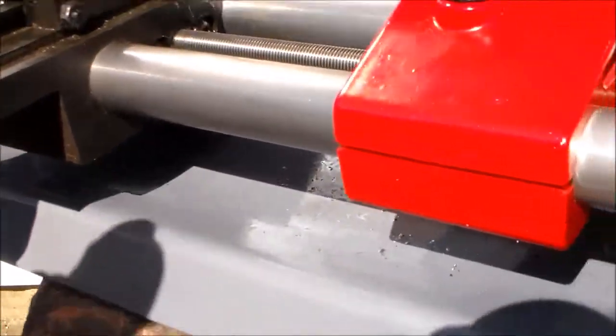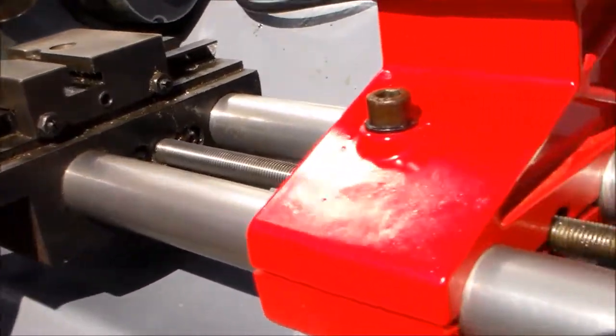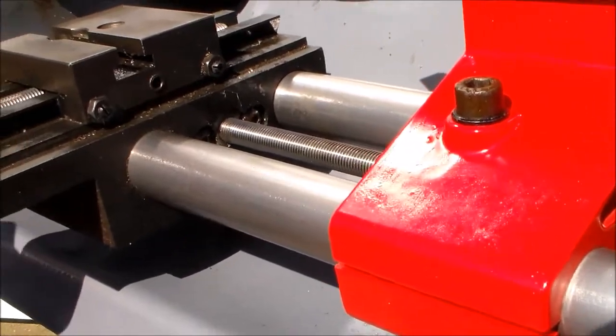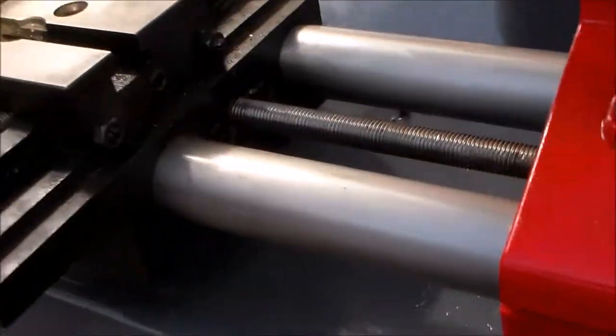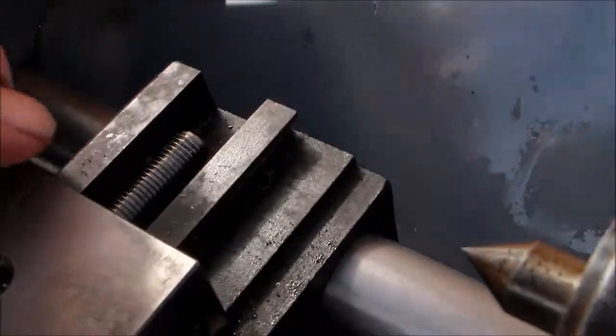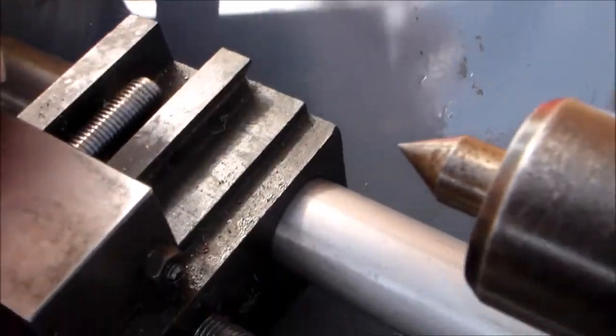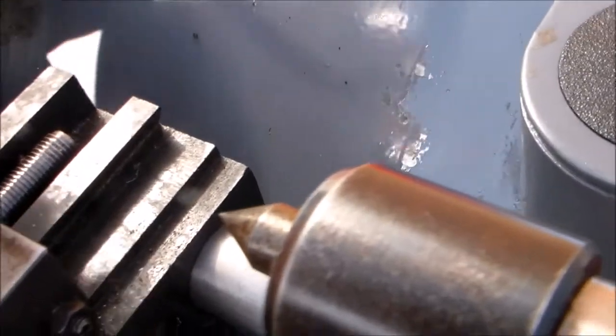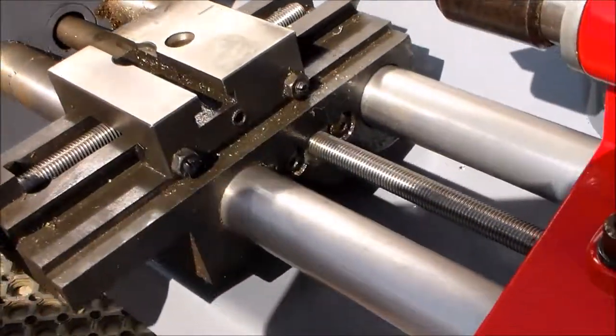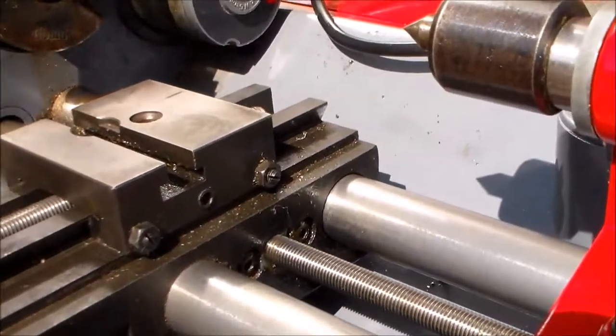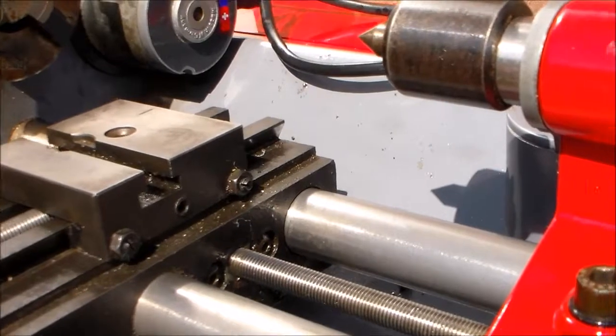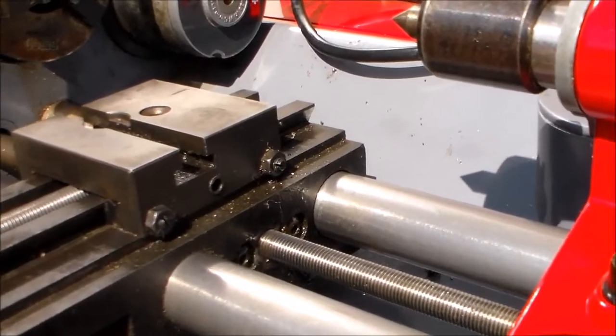So, yep, I took that little countersunk screw out of there. No idea what it does. Again, I'll look in the manual for that, but don't have any intention of disassembling the cross slide any further. Now that's enough for me.